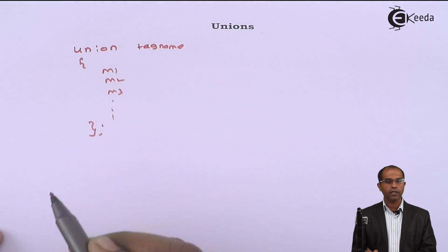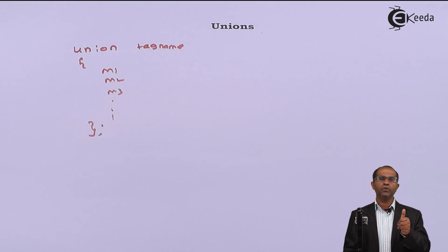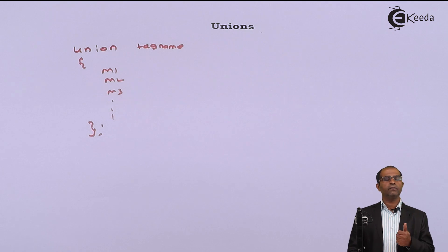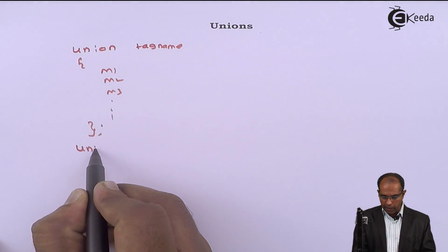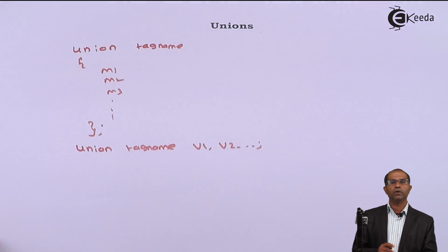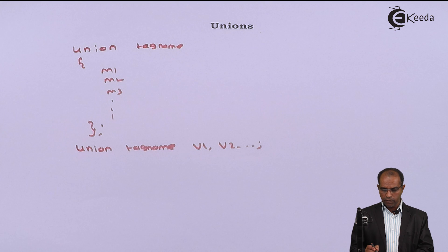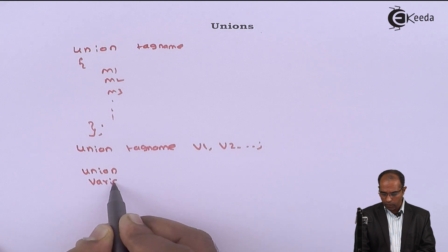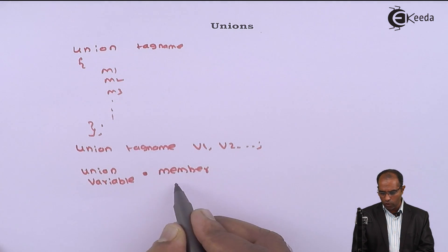The concepts of union should remain the same as structures. When a union is defined, the members will not have any single byte of memory. Memory gets allocated only when we create variables of the union. Variables are created as: union tag-name followed by variable names. To access members we use the dot operator: union-variable dot member-name.